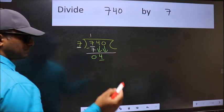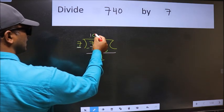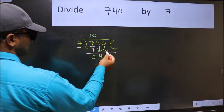The rule to bring down the second number is we should put 0 here. Then only we can bring this number down.